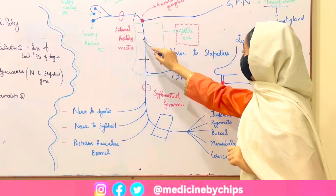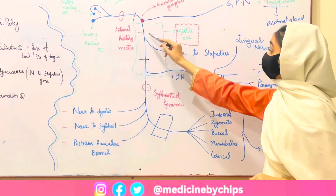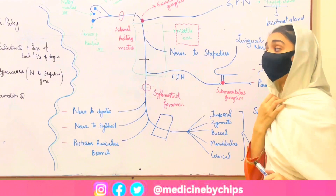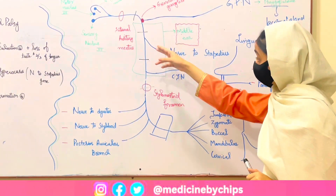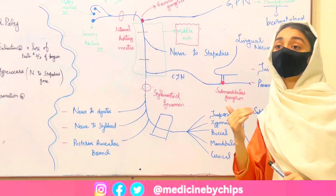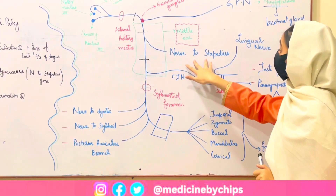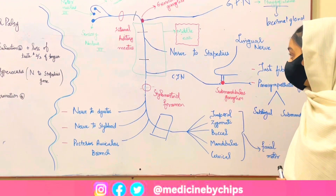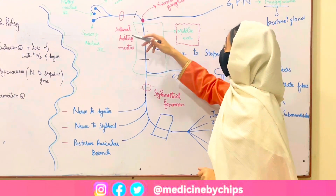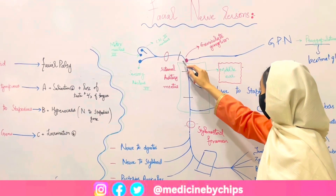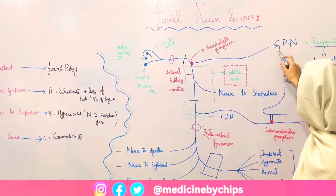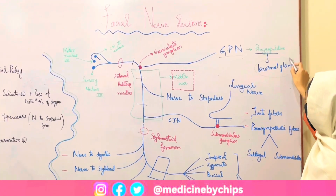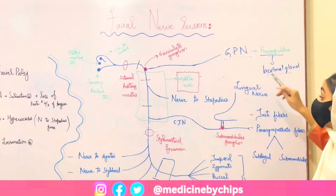For a lesion above the nerve to the stapedius, the stapedius muscle loses its function - it normally decreases sound intensity - so there will be hyperacusis, along with all the previous symptoms: loss of taste sensation, no salivation, and facial nerve palsy. If the lesion is at the level of the external genu, the greater petrosal nerve originates there and supplies the lacrimal gland via the pterygopalatine ganglion, so lacrimation is also lost along with all previous symptoms.